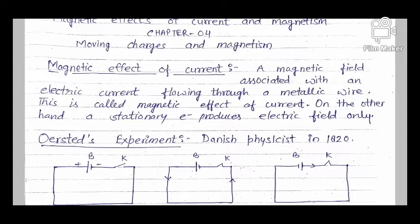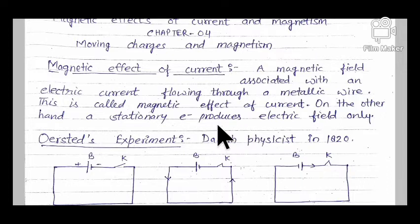The first topic is the Magnetic Effect of Current. A magnetic field associates with an electric current flowing through a metallic wire — this is called the magnetic effect of current. यानि जब किसी conductor में current flow हो रहा है, तो उसके चारों ओर magnetic field produce हो जाता है।